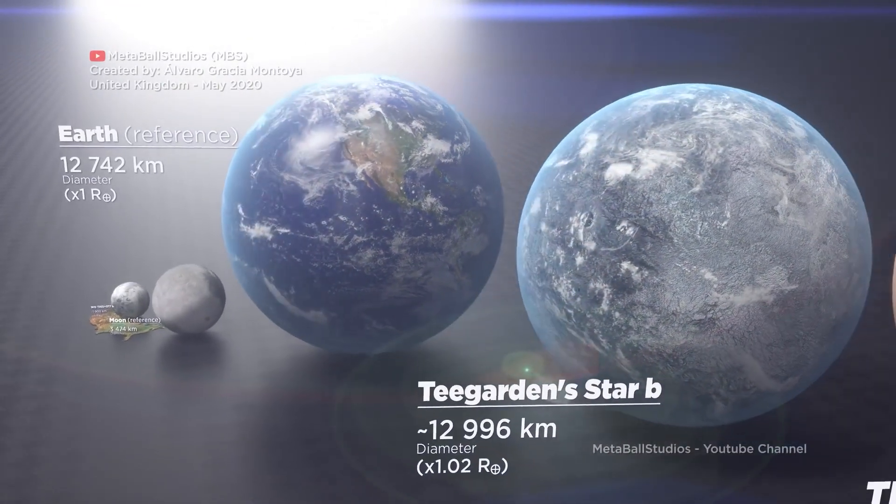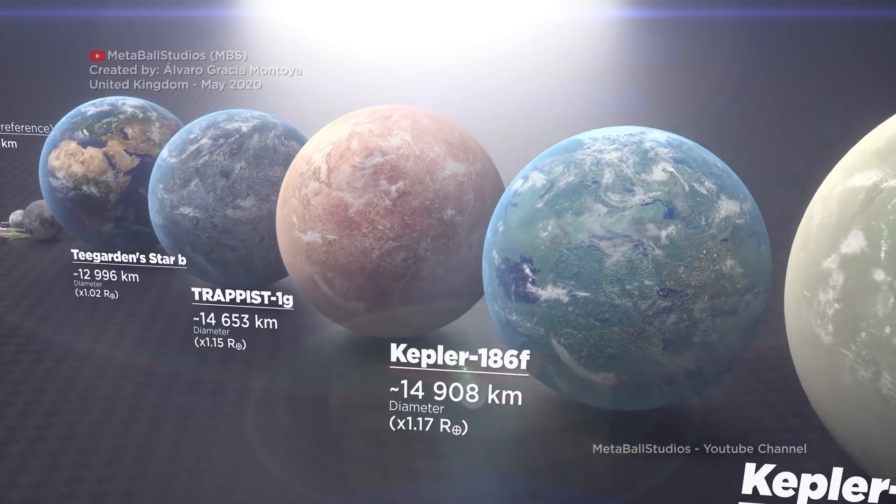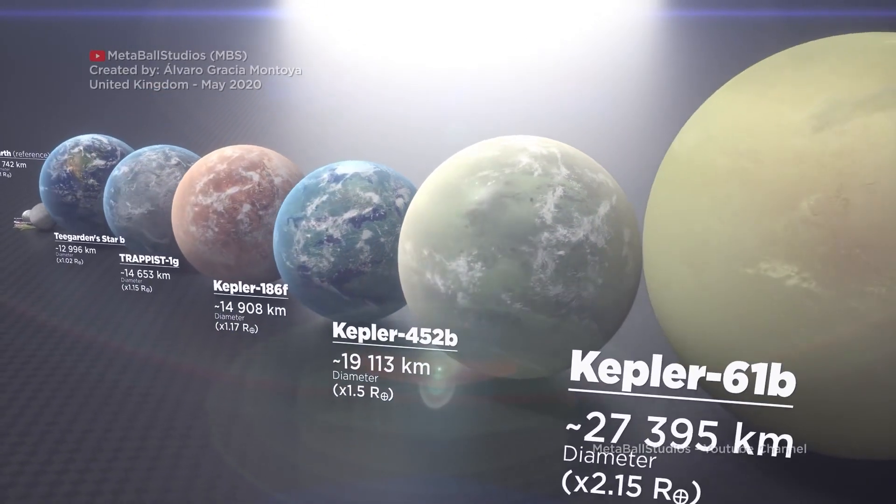However, only about a dozen of these have been directly imaged. The majority of exoplanets are so far away that they can only be seen when their host stars' light dims as the planet passes in front of it.